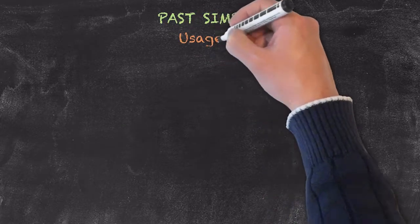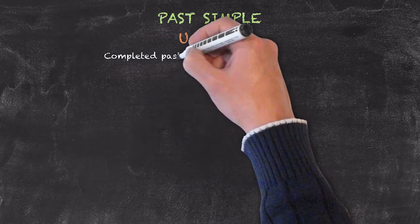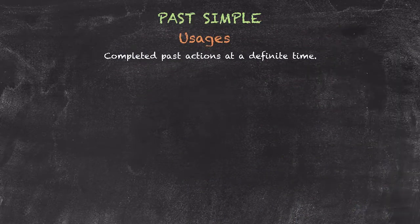As previously mentioned, the usage for the past simple tense is when you want to talk about completed actions in the past at a definite time frame.